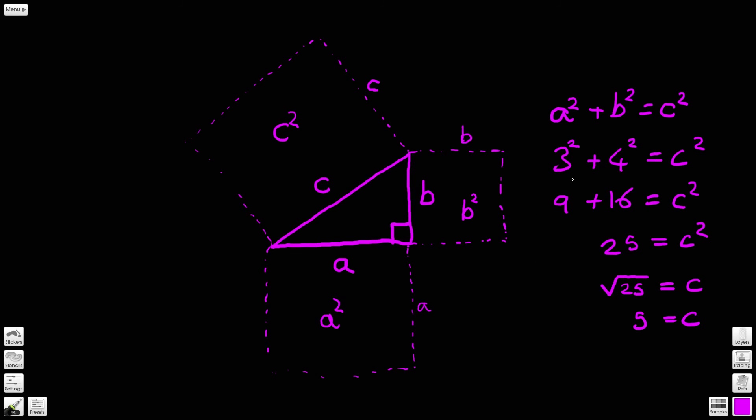You could actually draw this triangle out with these sides and measure it up. So you could make a equal three centimeters long, b equal four centimeters long, and then if you measured this length here you would find that it would indeed be five centimeters long.